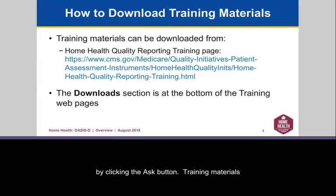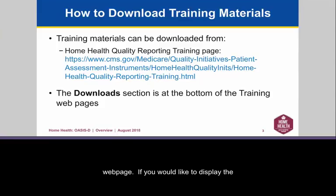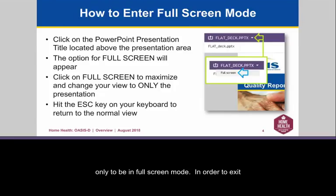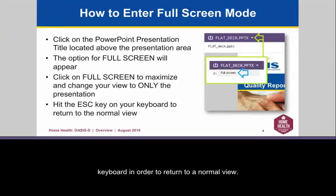Training materials can be downloaded from the Downloads section of the Home Health Quality Reporting Program Training page. The Downloads section is at the bottom of the Training webpage. If you would like to display the slides in a larger view, click the title of the PowerPoint presentation and the option for Full Screen will appear. To exit full screen, hit the escape key on your keyboard to return to a normal view.